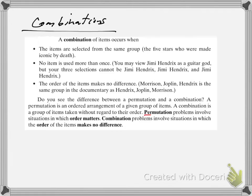The difference between a combination and a permutation is that in a permutation, problems involve situations in which order matters. So in the situation I just gave, we're not only concerned about choosing five people to perform out of 28. We're actually trying to find all the different ways that we could order them from first performer to second to third to fourth to fifth. In a combination, we don't care about order.